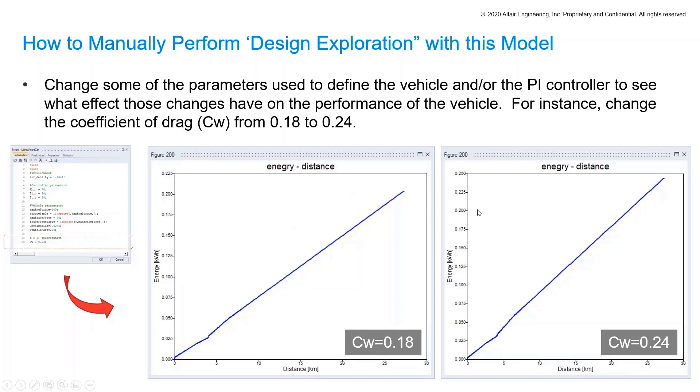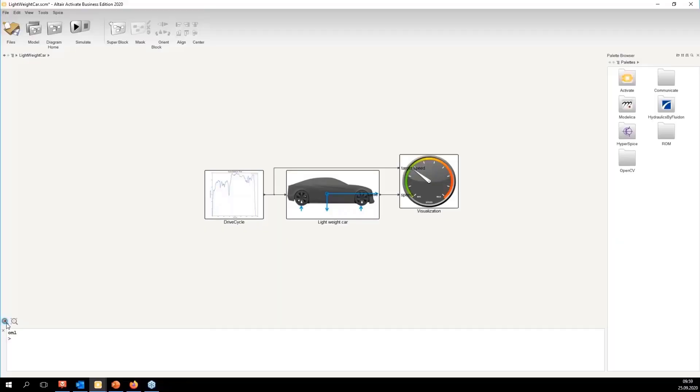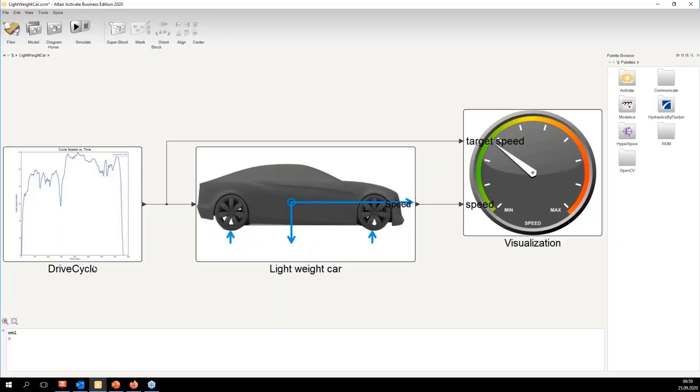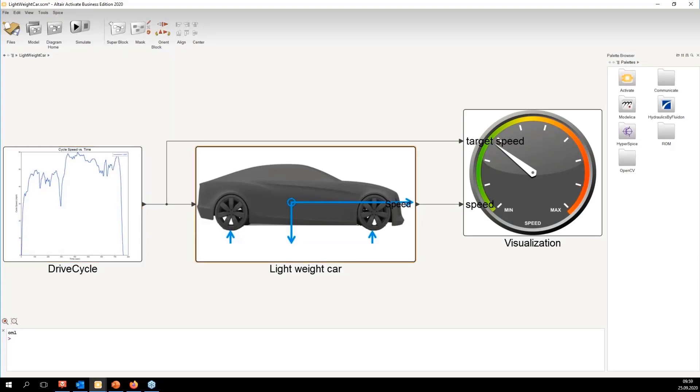If we increase this drag coefficient, there's more energy used on the same distance, because the resistance is higher. And here you can see the actual lightweight car. Let's take a closer look what we have here.